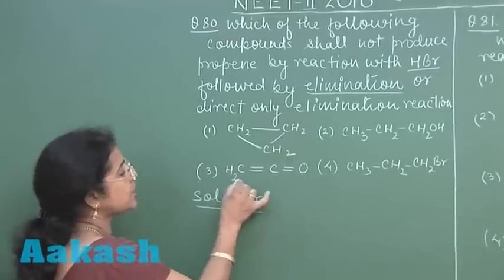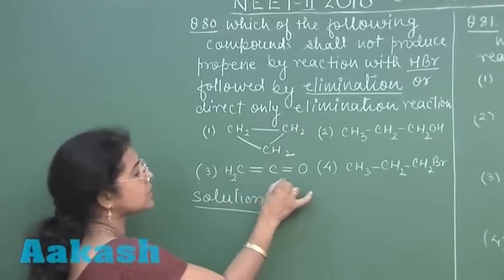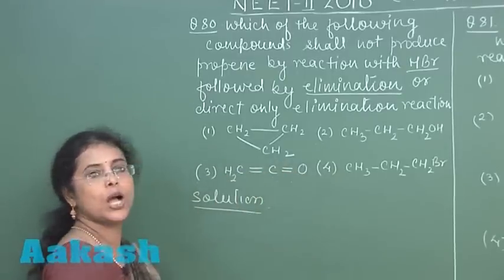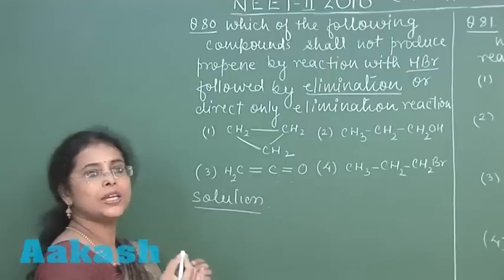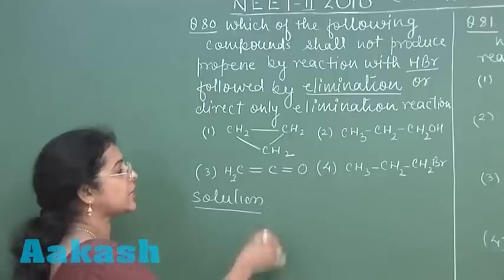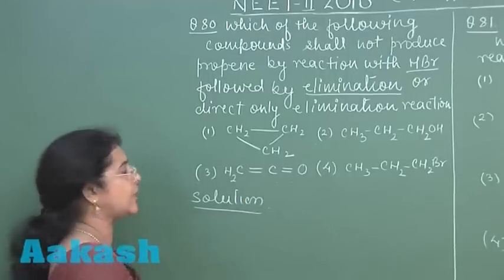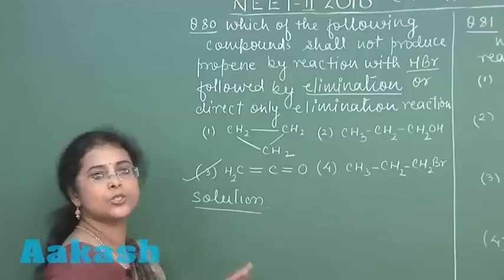The third option is CH2=C=O. This reactant molecule is having only 2 carbon atoms. So by any means of reaction it cannot produce an alkene of 3 carbon atoms. So this should be the answer of the question.